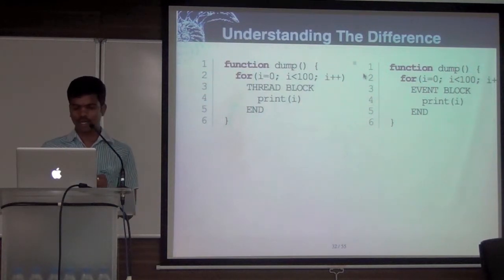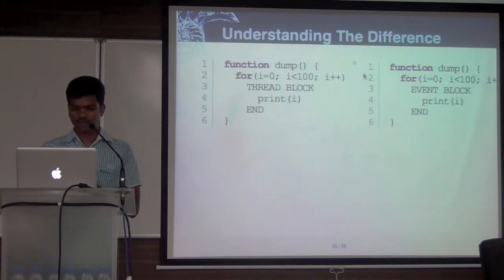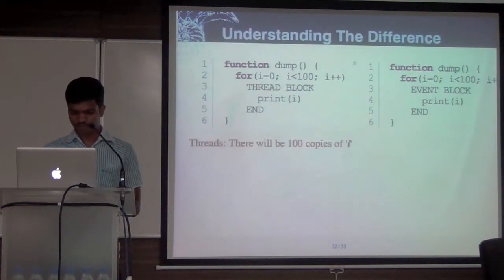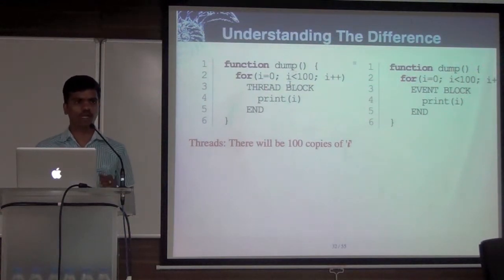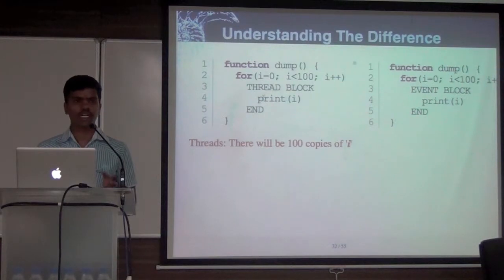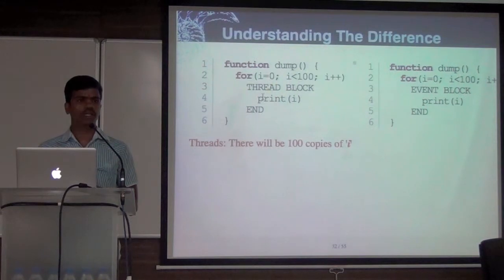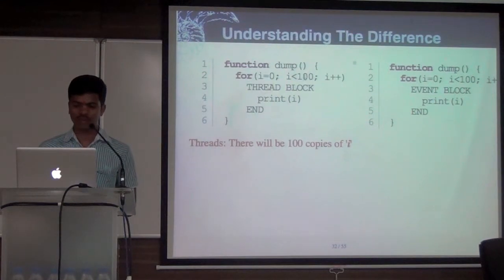Both of them are going to run in parallel and print i 100 times. But what is the difference — why is event programming popular? The first problem with threading: whenever a new thread is created, all the local variables available will be available to the threading block. So you have 1000 threads running — each and every thread will have its own local copy of local variables, which is on the stack.